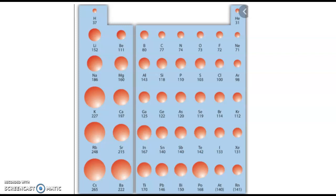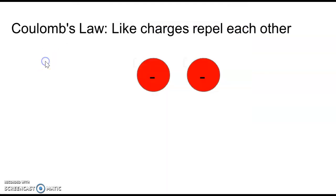We're going to review some of the patterns and trends you're going to see on the periodic table. The one I want to focus on in this video is how when you move across the periodic table, the actual diameter of the atom gets smaller. The atomic mass will get larger, but the actual atom size will get smaller, and I want to explore why that could possibly be. Before I get started with that, we're going to revisit Coulomb's Law.